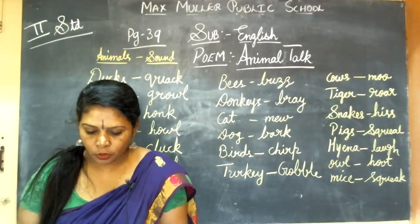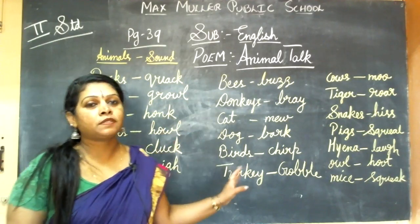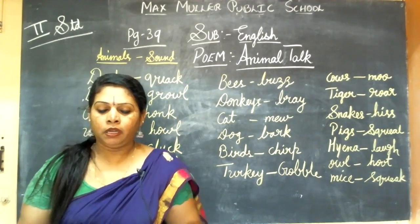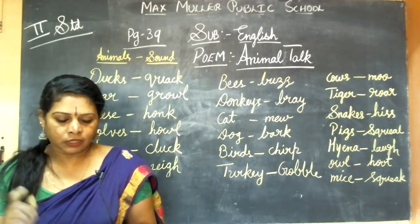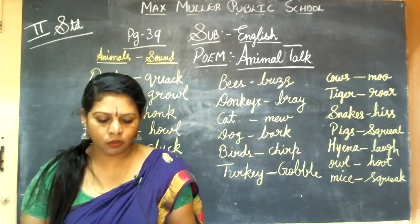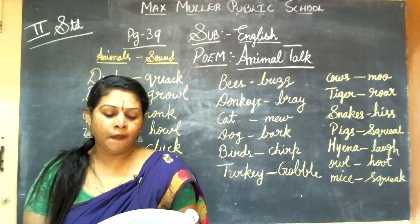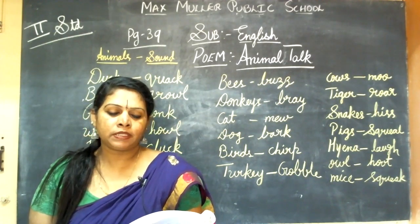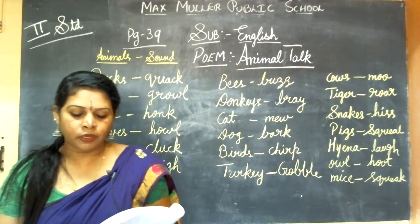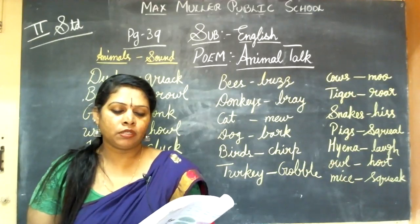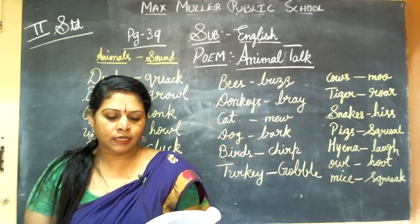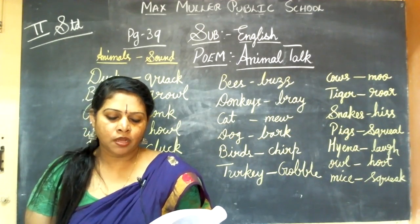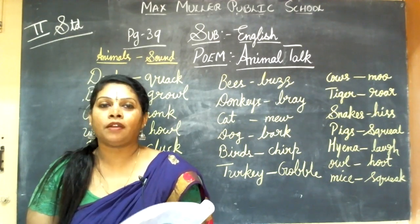Okay children, I hope you all have copied. Now once again I will read out: Ducks quack, bears growl, geese honk, wolves howl, hens cluck, horses neigh, bees buzz and donkeys bray. Cats meow, dogs bark, birds chirp in the park. Turkeys gobble, cows moo, tigers roar in the zoo. Snakes hiss, pigs squeal, hyenas laugh a great deal. Owls hoot, mice squeak — animals do not speak.